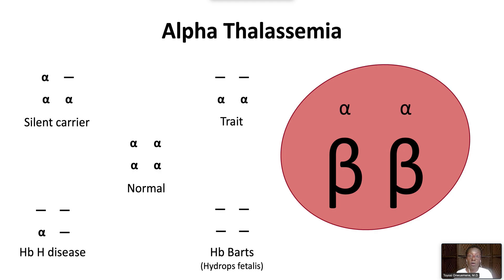Deletion of all four genes results in tetramers of gamma globin called hemoglobin BARTs. The resulting condition, hydrops fatalis, is often fatal before birth.